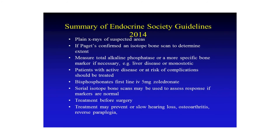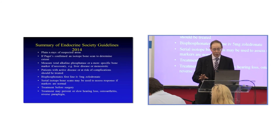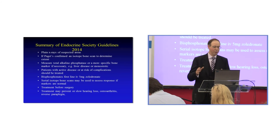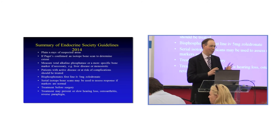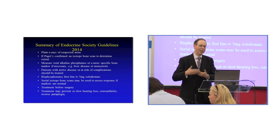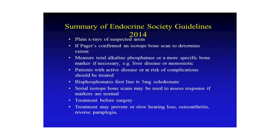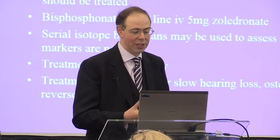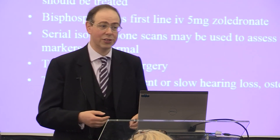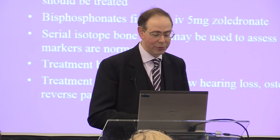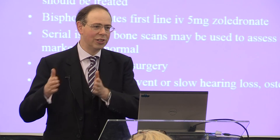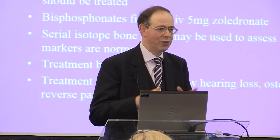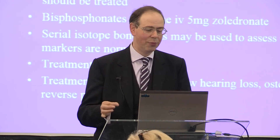They also suggested that patients with active disease or at risk of complications should be treated. Nobody would particularly argue with that as a point, but it's really the evidence behind it that needs re-evaluation. Intravenous bisphosphonates are very good at bringing down blood tests, and doing so might slow the progression of complications or even prevent them — such as hearing loss, osteoarthritis, or nerve entrapment problems. However, the evidence to say that giving bisphosphonates will actually do that is quite weak — much more of an opinion than evidence-based.